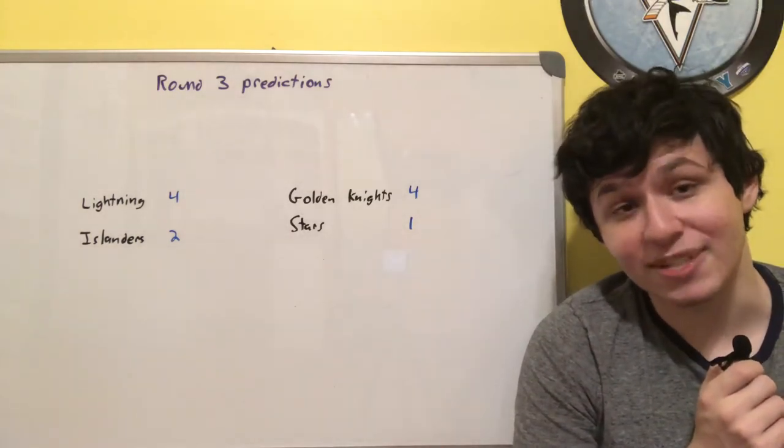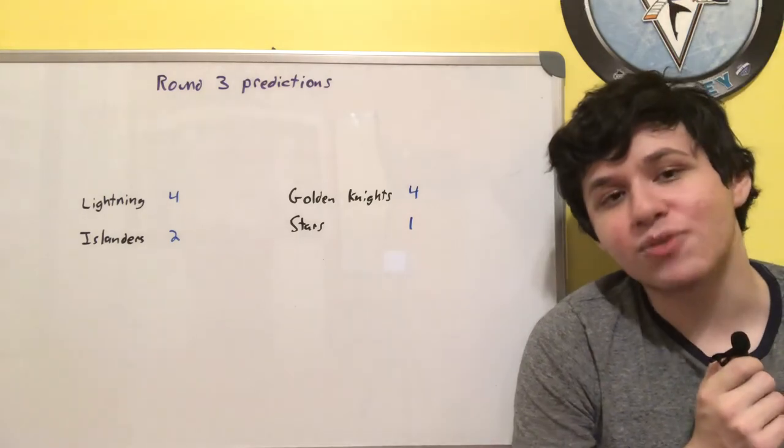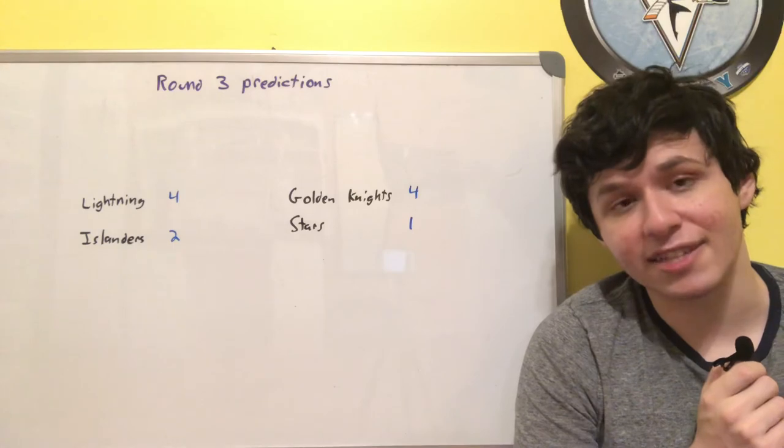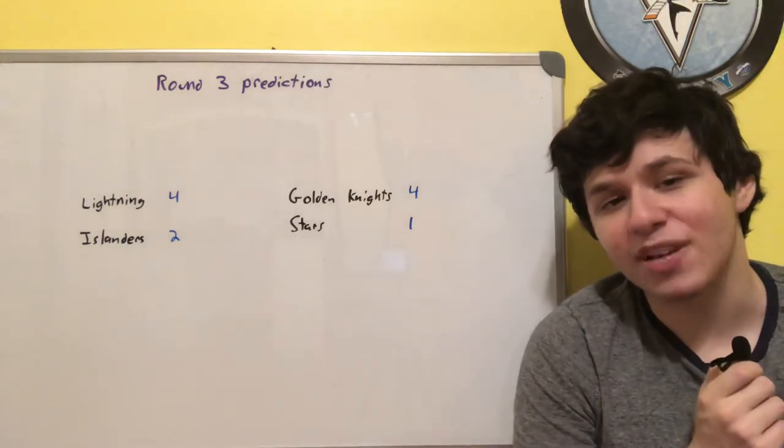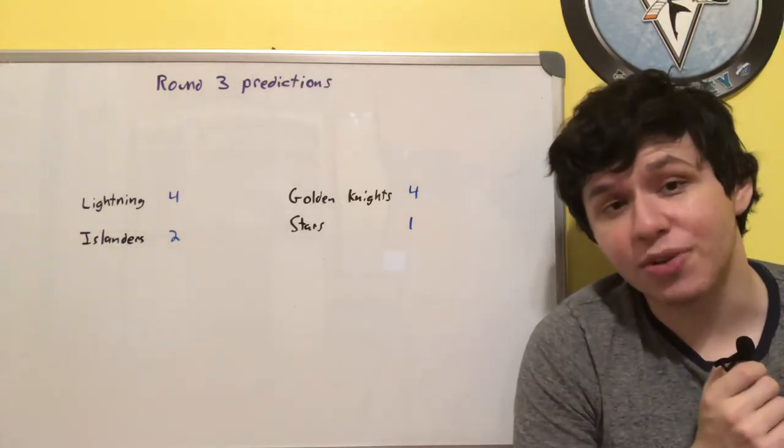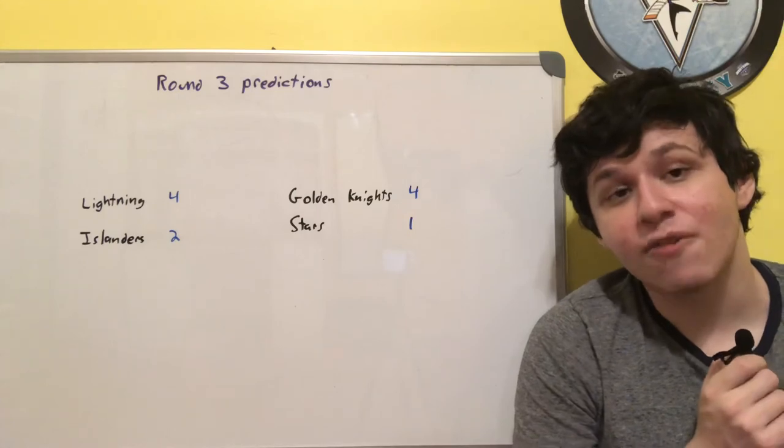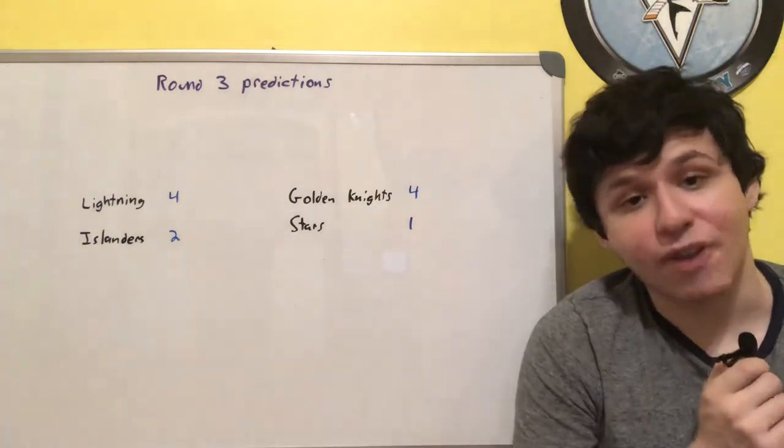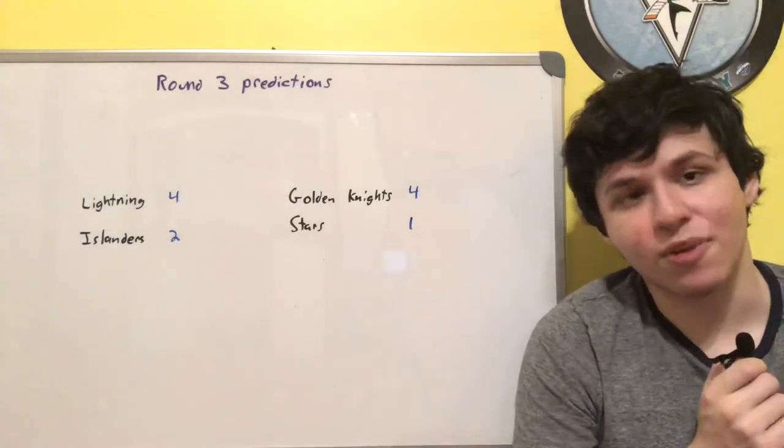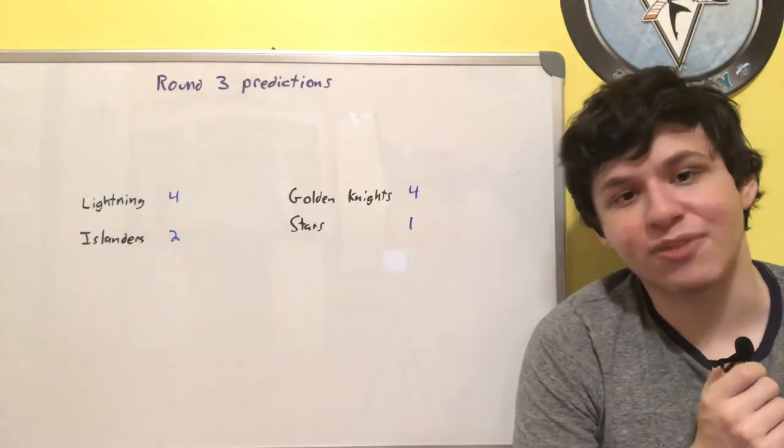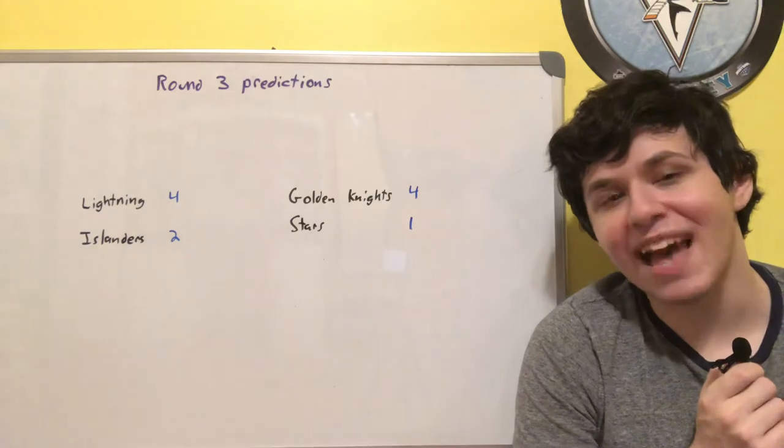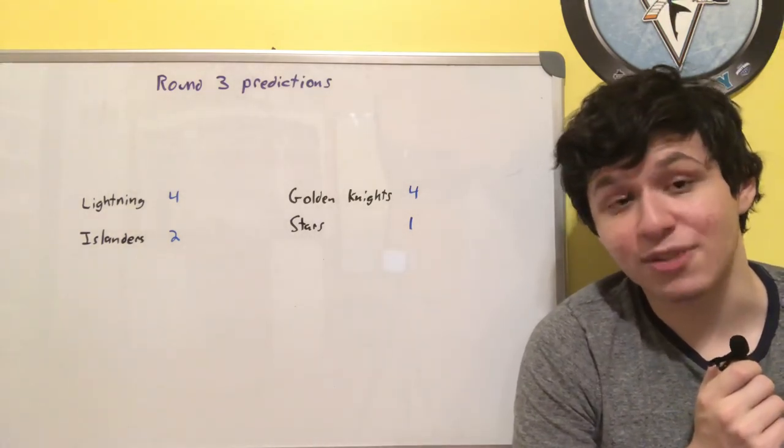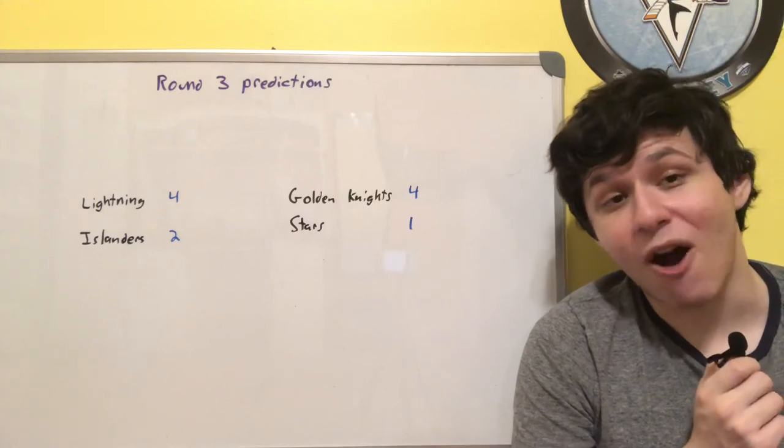It should also be mentioned the Stars offense was looking very good in that series against the Avalanche, but the Avalanche were not only shorthanded defensively without Eric Johnson who got injured early in this series, but were also shorthanded goaltending-wise, using the third-string goaltender Michael Hutchinson for almost half of this series and then their backup Francouz for the rest of it. So really Grubauer their starting goaltender only played the first game and Grubauer is not even as good as the starting goaltender for the Golden Knights which is Robin Lehner.